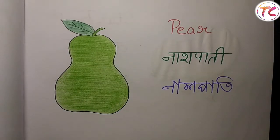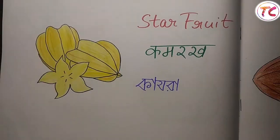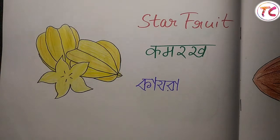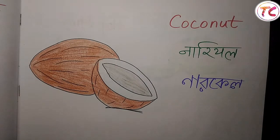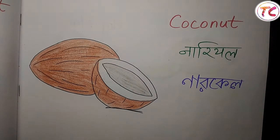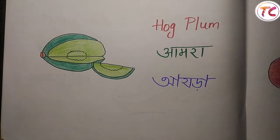Pear — nashpati — নাশপাতি. Star fruit — kamrak — কামরাঙা. Coconut — nariyal — নারকেল. Hog plum — amra — আমড়া.